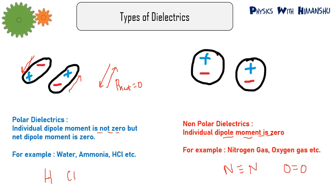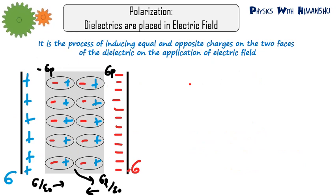Now, what will happen if we place a dielectric in an external electric field? Suppose we put a dielectric between the two plates of a parallel plate capacitor — one positively charged plate and one negatively charged plate with surface charge density sigma. The positive plate attracts negative charges in the dielectric toward it, and the negative plate attracts positive charges toward it. However, these charges cannot come outside the atom because the material is an insulator — electrons are not free to move.